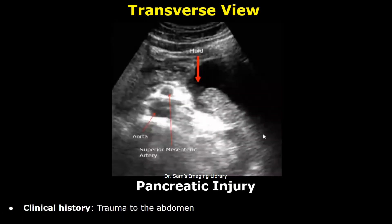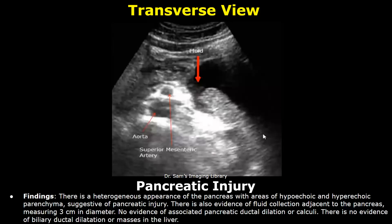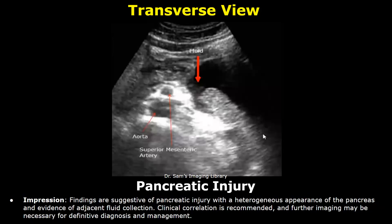This is a case of pancreatic injury. The clinical history is trauma to the abdomen. In the findings: there is a heterogeneous appearance of the pancreas with areas of hypoechoic and hyperechoic parenchyma suggestive of pancreatic injury. There is also evidence of fluid collection adjacent to the pancreas measuring 3 centimeters in diameter. Impression: findings are suggestive of pancreatic injury with a heterogeneous appearance of the pancreas and evidence of adjacent fluid collection. Clinical correlation is recommended and further imaging may be necessary for definitive diagnosis and management.